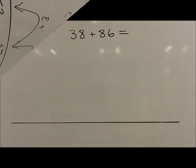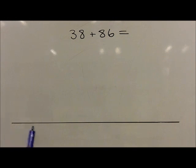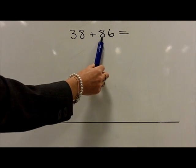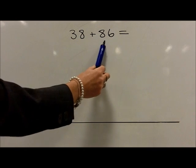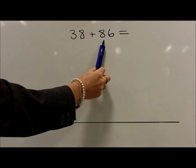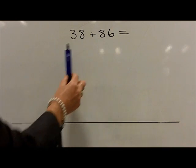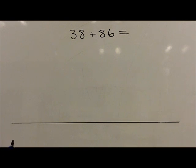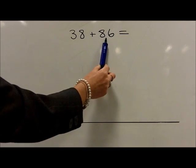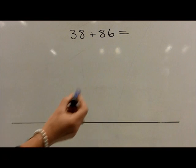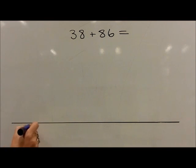Children will continue to use empty number lines with increasingly large numbers. They count on from the largest number irrespective of the order of the calculation. So in this question, they count on from 86 on the left hand side of the number line.